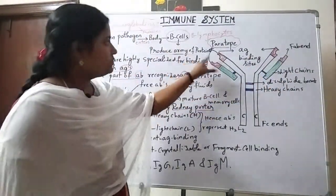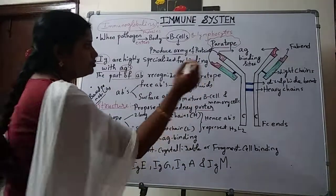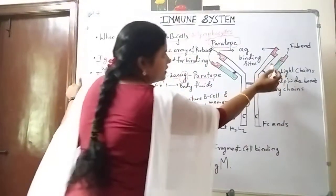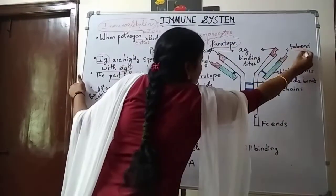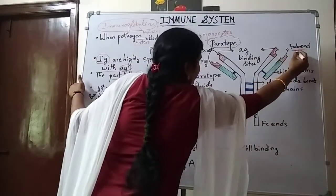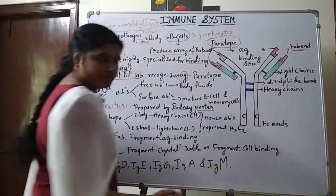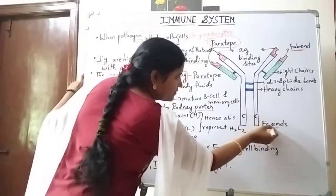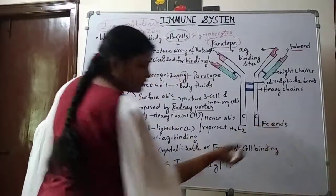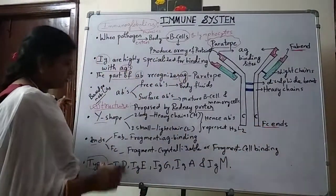These paratopes together form the FAB end. Here we can see the FAB end at the top, and down you can see the FC end.